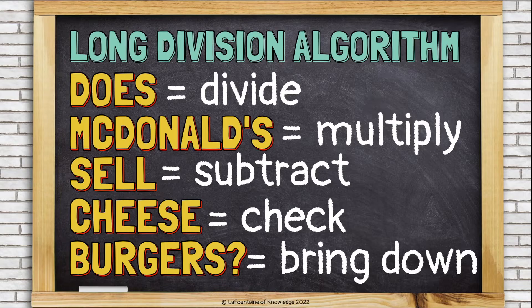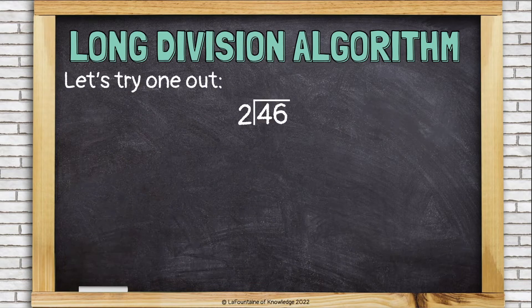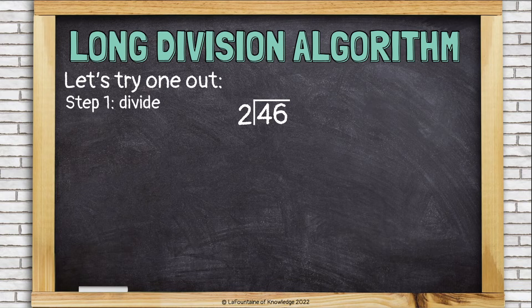Divide, multiply, subtract, check, bring down. Let's try one out. We'll divide 46 divided by two. The first step is to divide. I'm dividing everything by the two in this problem. The two is the divisor — that's always going to be the number I'm dividing by.